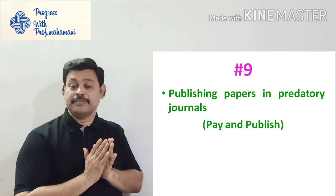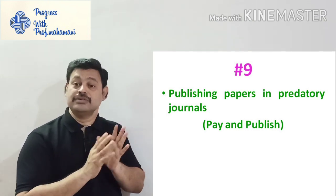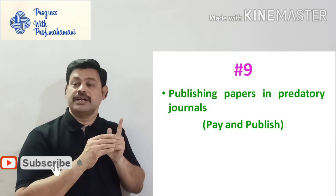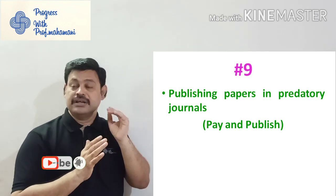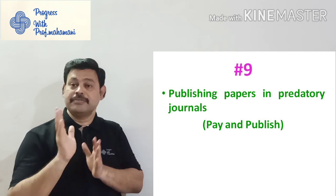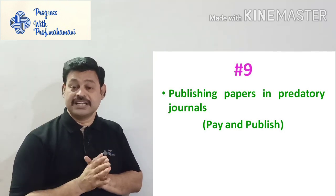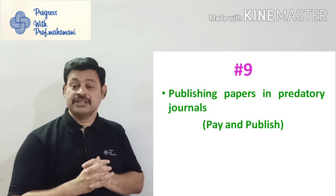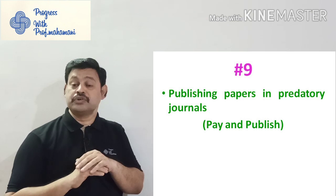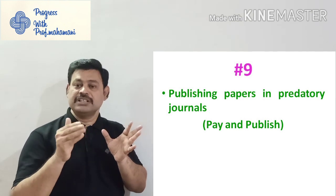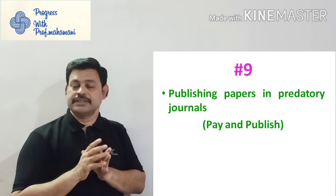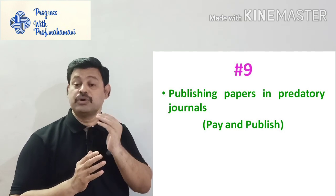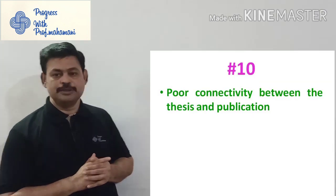The ninth mistake is publishing papers in predatory journals. These journals send attractive emails to authors claiming to be indexed by various bodies and promising very quick publication — even within a week. They collect around 20,000 to 25,000 rupees without doing any peer review and publish straight away. Later, UGC CARE and Scopus identify the poor quality of articles and remove these journals. Once removed, all work published in those journals becomes invalid.